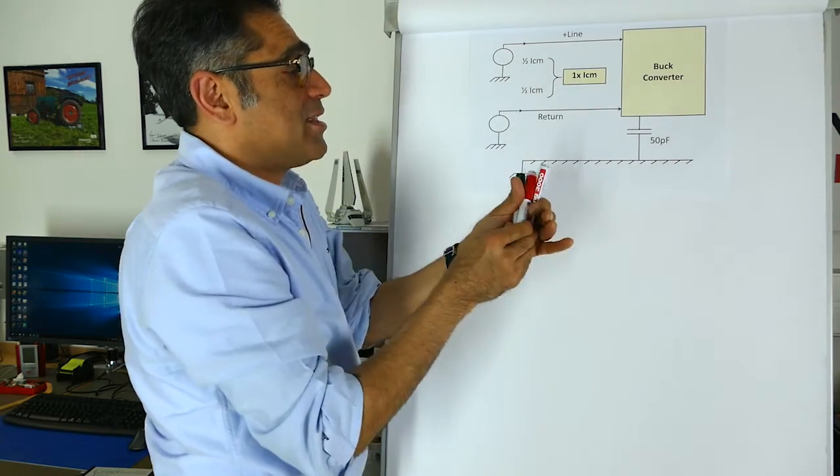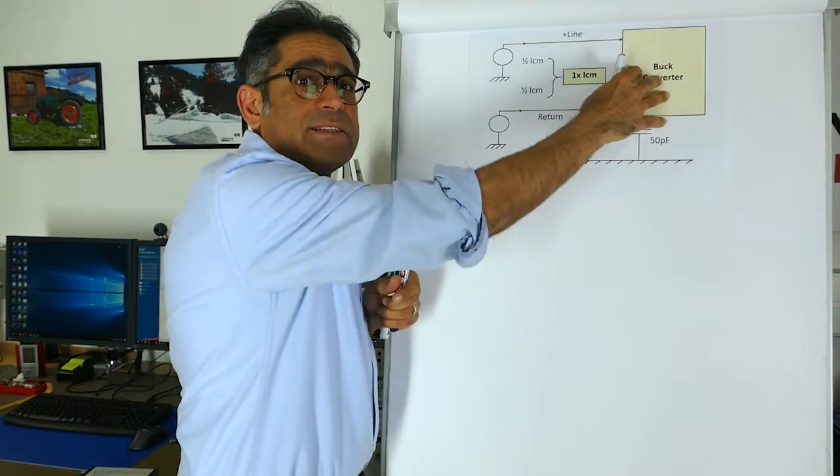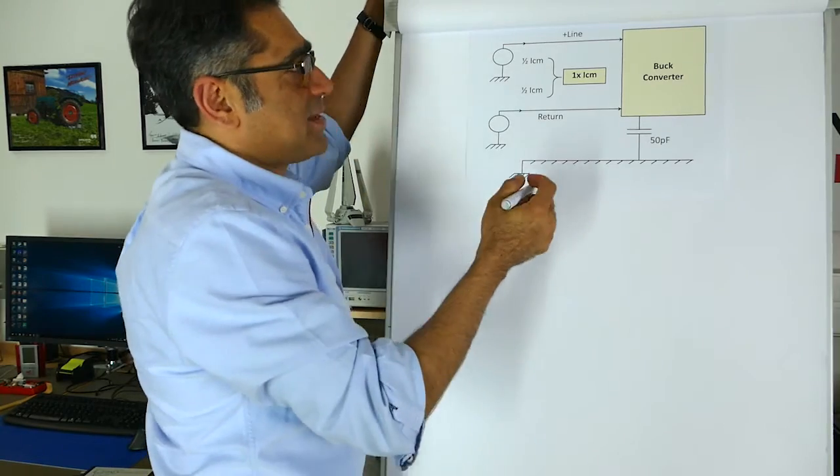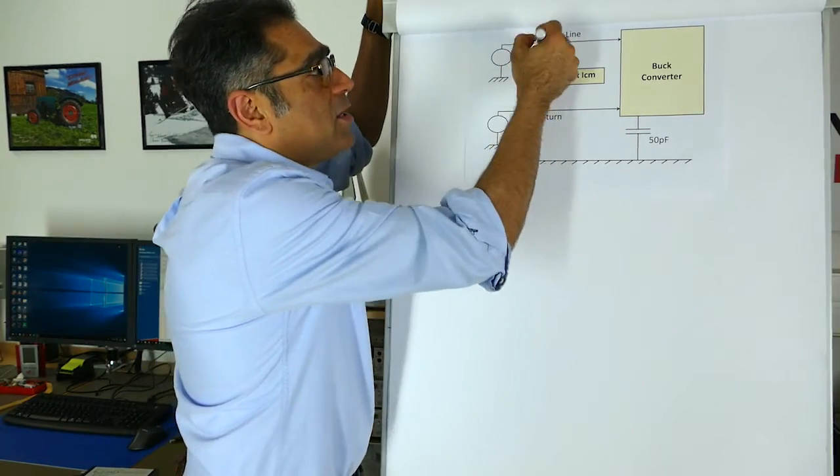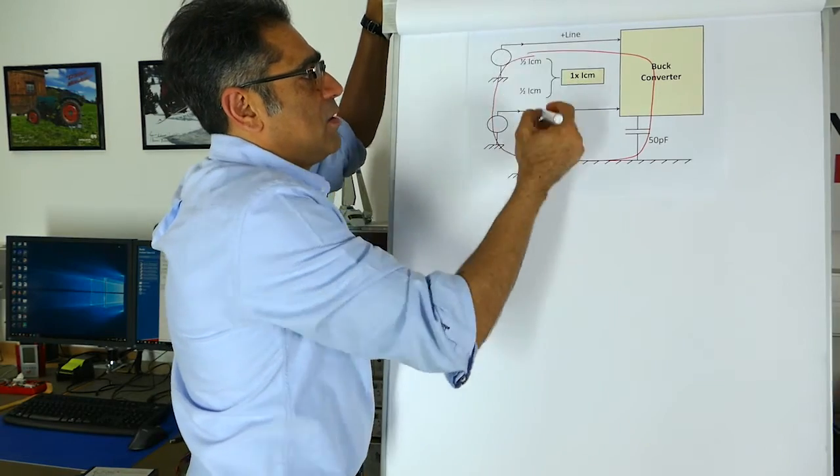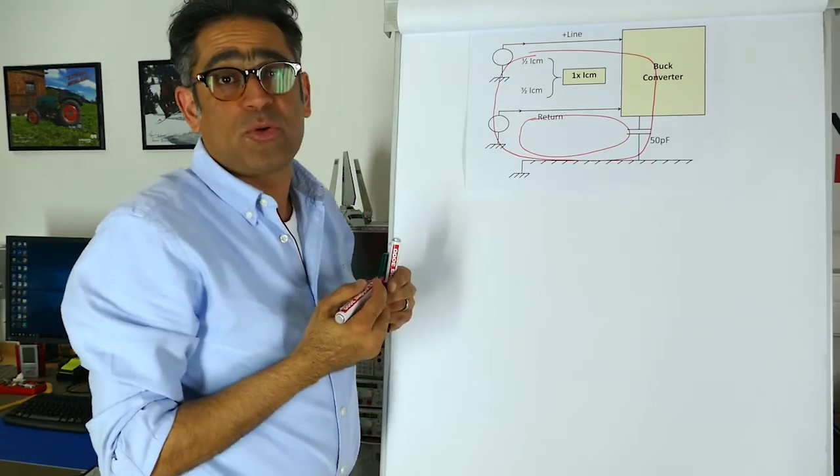And exactly the same thing happens. The high dv/dt and the high di/dt that is inside of the power supply will couple through this capacitor, and then you end up with again currents flowing in exactly the same way, like so and like so. And these are our common mode currents.